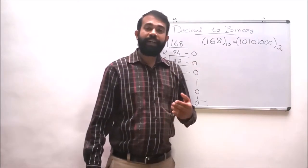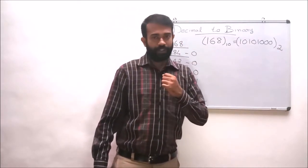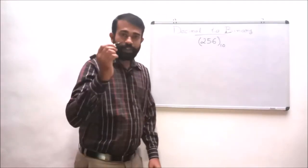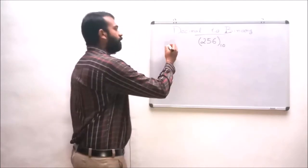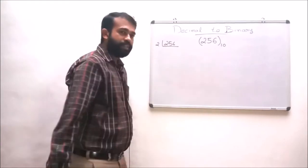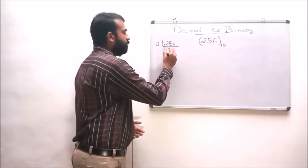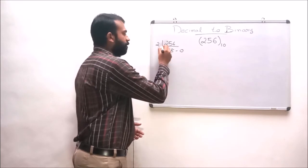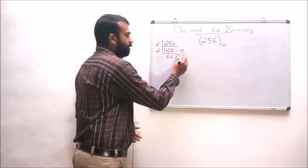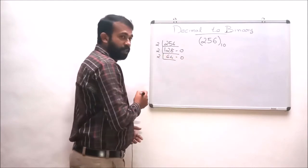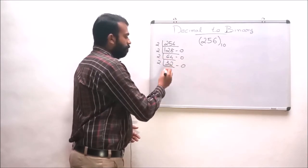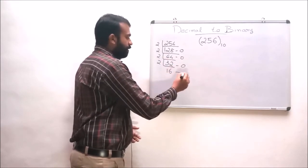Let us consider one more example: 256 to base 10. Dividing 256 by 2 gives 128 with a remainder of 0. Dividing 128 by 2 gives 64 with a remainder of 0. Dividing 64 by 2 gives 32 with a remainder of 0. Dividing 32 by 2 gives 16 with a remainder of 0.